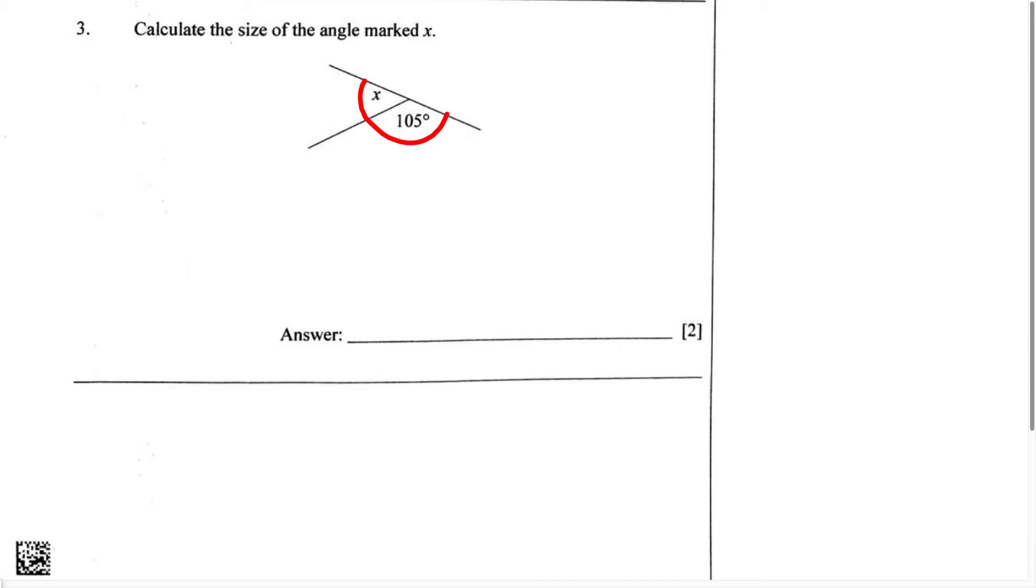So we know angle X plus 105 degrees is going to give us 180 degrees. Now we have to make angle X the subject in this equation. In order to do that, we're going to have to move 105 degrees over to the next side.